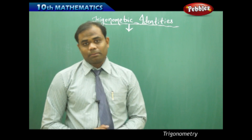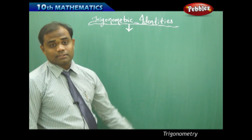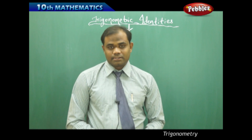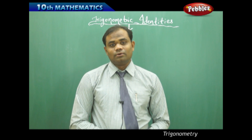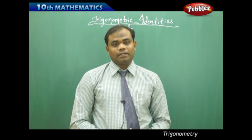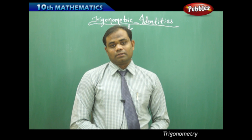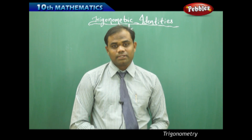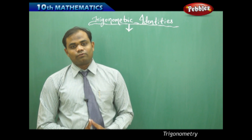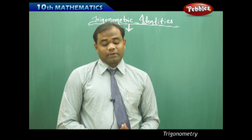Trigonometric identities is the topic of this session. What are identities in mathematics? For example, (a + b)² = a² + 2ab + b², and this holds true for any values of a and b. It is universally true, which proves it is an identity. Such expressions which are equated to be true for all values are said to be identities, and trigonometric ratios are also connected with identities.